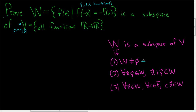The first condition is that W is non-empty. The second is that given any two vectors, the sum is also in W — this is called closure under vector addition. The third condition is called closure under scalar multiplication, which says that given a vector x in W and a scalar c, where our field is the real numbers, the scalar product c times x is also in W.